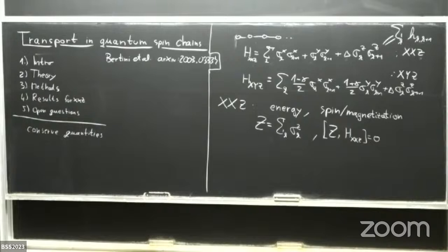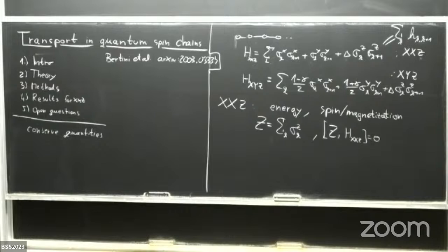The question was whether we need the thermodynamic limit. Transport, rigorously speaking, is always defined only in the thermodynamic limit. Only in the limit of infinite system size and infinite times can you distinguish between different functional forms — e.g., power laws with different exponents. If you have a finite system you are limited to finite windows of time, and you cannot really distinguish, say, a power law with one exponent versus another, because it's just a finite window of fitting.